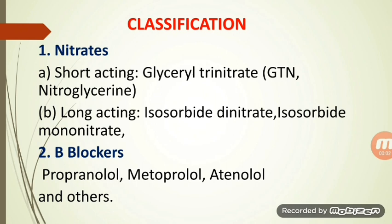Angina pectoris is a sudden severe chest pain that occurs due to insufficient coronary blood flow to meet the oxygen demand of the myocardium, which finally leads to ischemia. The myocardium is the muscular tissue found in the heart's middle layer. Due to lesser blood perfusion, anti-anginal drugs are used to decrease the oxygen demand of the myocardium by altering blood pressure, heart rate, contractility, etc.